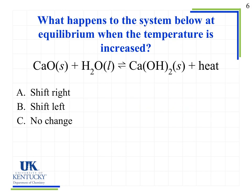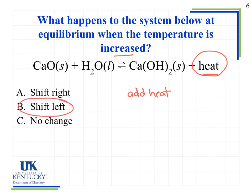Now let's look at what happens when the temperature is increased for a reaction where heat is listed as a product — an exothermic process. You need to think about whether that changes the behavior. If we increase the temperature, that is the same as adding heat, and because heat is listed as a product, that's the same as adding a product. As a result, the reaction is going to shift left to compensate for that added heat.